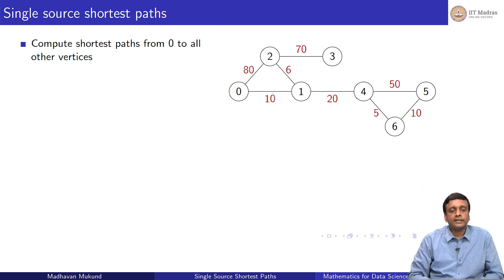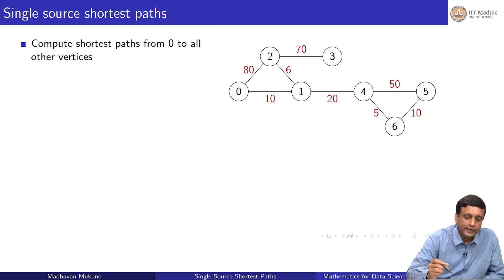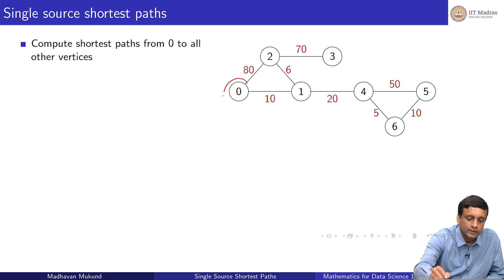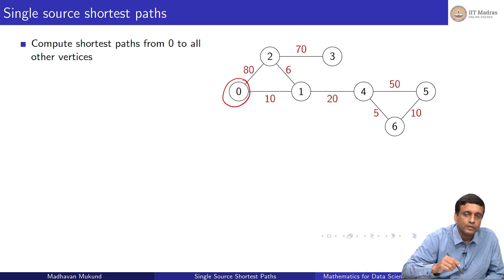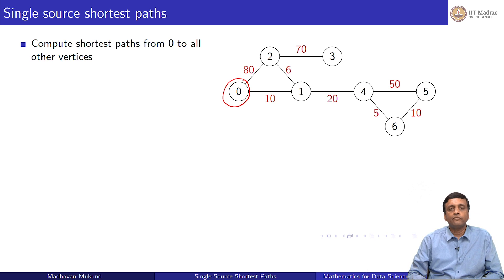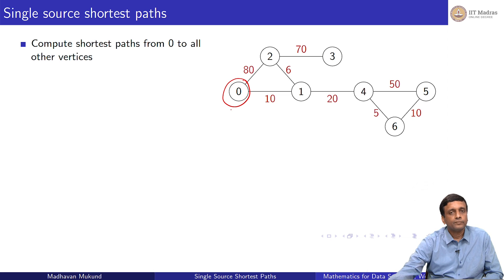We are looking at graphs where all edge weights are either 0 or positive, not negative. Let us say that our single source in this particular example is vertex 0. We want to find the shortest path from 0 to every other vertex in this graph.